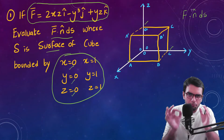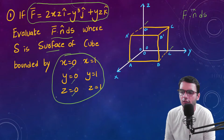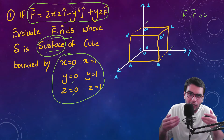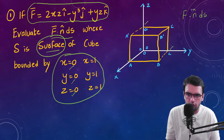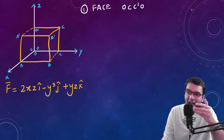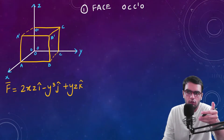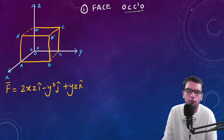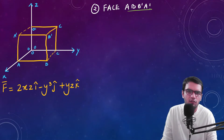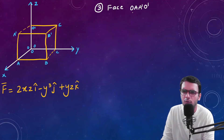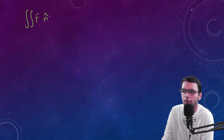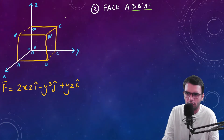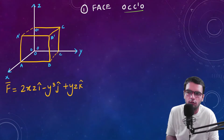Let's start with the process to solve these types of problems. Since it is a surface integration over a cube, I need to calculate how many surfaces there are — a cube has six surfaces. I will evaluate the integration over each surface separately, and the total surface integration will be the sum of all six integrations.